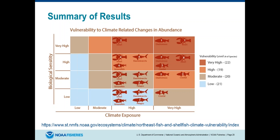We did get more of a spread on the biological sensitivity. On the very high end, there are invertebrates — you can see the little picture of a lobster, there are two inverts in that category, there's a diadromous species, there's an elasmobranch. Overall, your invertebrates and shellfish are more vulnerable due to their vulnerability to ocean acidification, while pelagic species are usually on the less vulnerable side.